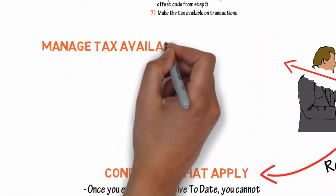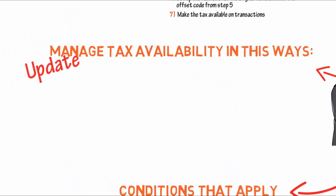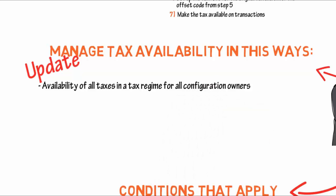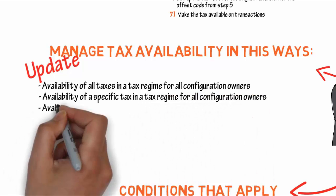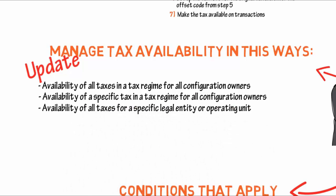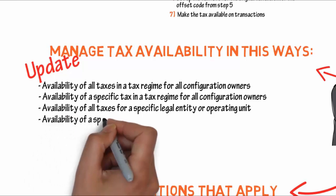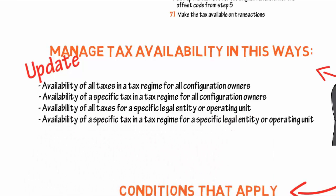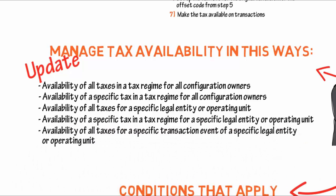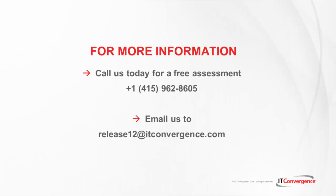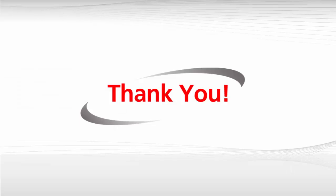You can manage tax availability in these ways: availability of all taxes in a tax regime for all configuration owners; availability of a specific tax in a tax regime for all configuration owners; availability of all taxes for a specific legal entity or operating unit; availability of a specific tax in a tax regime for a specific legal entity or operating unit; and availability of all taxes for a specific transaction event of a specific legal entity or operating unit. Thank you. For more information, call us today for a free assessment and email us at Release12@itconvergence.com. Don't forget to watch our series of videos about business tax.